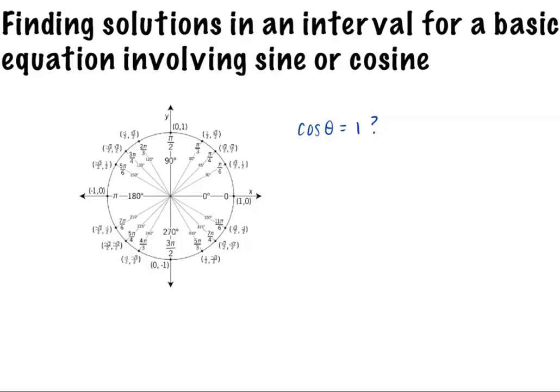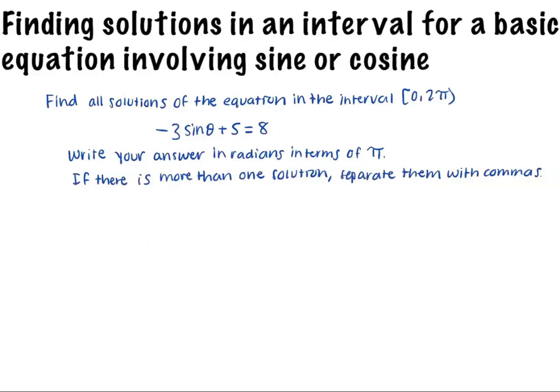Let's do another example. Find all solutions of the equation in the interval 0 to 2π. Negative 3 sine of θ plus 5 equals 8. Write your answer in radians in terms of π. If there is more than one solution, separate them with commas.